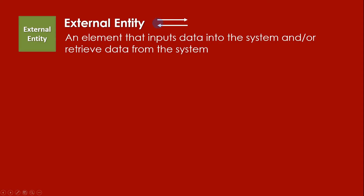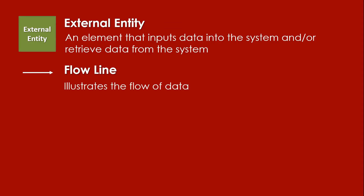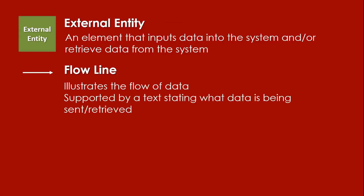That is being identified using the arrow, which is called the flow line. The flow line illustrates the flow of data. It is supported by a text stating what data is being sent or retrieved.